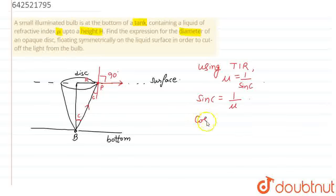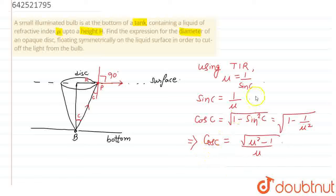So, we can find out cos C and that will be the root of 1 minus sin square C. Putting the value we get root of 1 minus 1 by mu square. This gives us cos C as root of mu square minus 1 by mu.